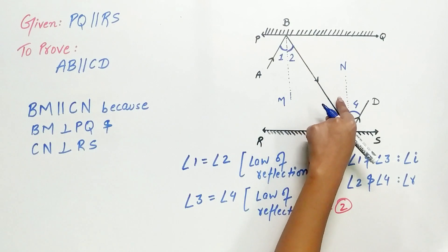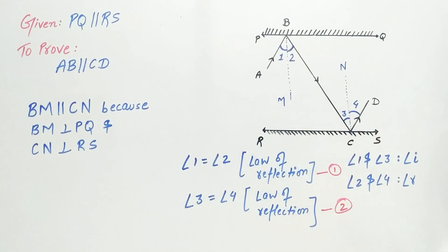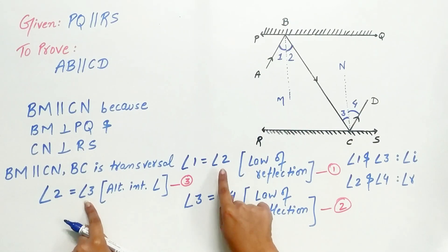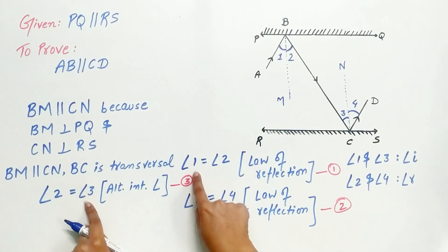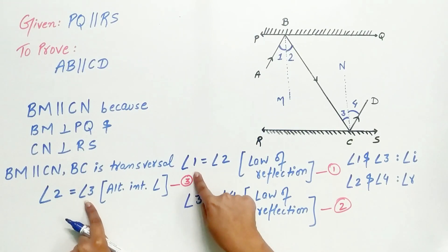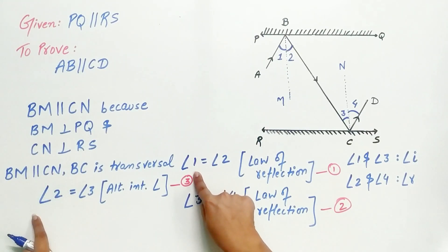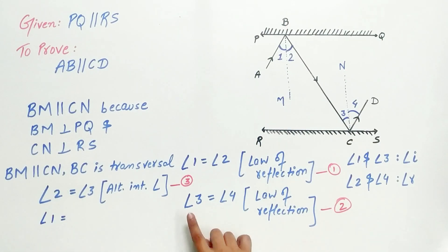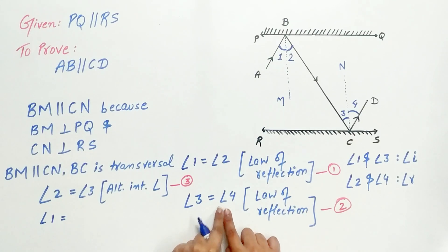Angle 2 is equal to angle 3 because of alternate interior angles. Now try to understand: angle 2 is equal to angle 3, but angle 2 is also equal to angle 1, so we can write angle 1 in place of angle 2. Similarly, angle 3 is equal to angle 4, so we can write angle 4 in place of angle 3.